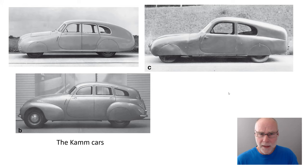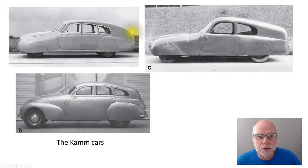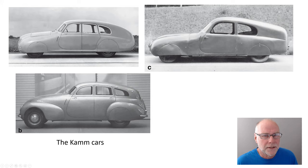Now, if we look at his three prototype cars, none of them actually has what we'd now call a cam back. This one slopes down and has quite a gentle curve at the back, quite a rounded trailing edge. This one slopes down and has a round trailing edge. And this one slopes down and has a round trailing edge. So the definition of what we're calling a cam tail or a cam back — that abrupt cutoff — seems to have varied from what he was actually doing.